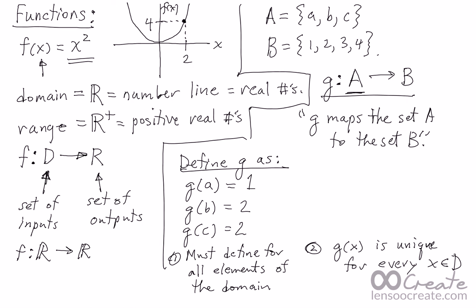G of X is unique for every X in the domain. Okay, here I'm using the set theory notation, for all X that are members, for all things X, for all mathematical objects X that are an element of the domain D.